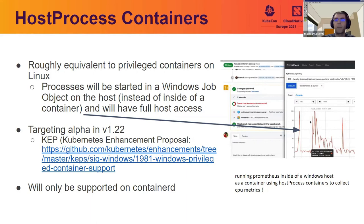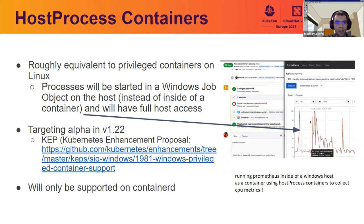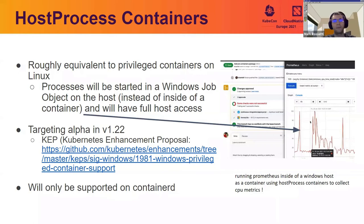Host process containers will enable almost all of the scenarios people commonly ask for with privileged container support on Windows — anything from running the Prometheus node exporter, to performing maintenance operations on the node, getting logs, or bringing in components like CNI binaries via a pod and daemon set to make management easier. We're targeting an alpha release in v1.22, which should be coming out in the next couple of months, and there's a big enhancement proposal there — please read it, comment, and share your thoughts. Note that this will only be supported with Container D, as that is the future of the CRI going forward.